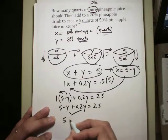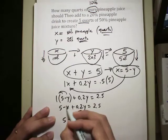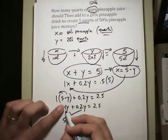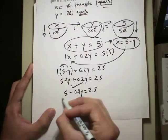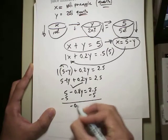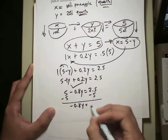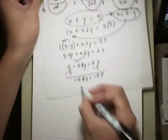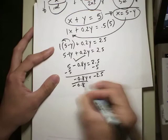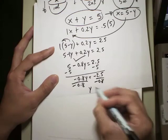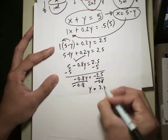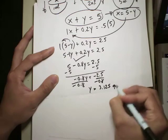Combining like terms, I have 5 minus, this is, don't forget, if I don't write it, it's actually one whole, right? So it's right here, negative 1 plus 0.2, which is negative 0.8Y equals 2.5. So if I clean this up a little bit more, subtracting 5 from both sides, I have negative 0.8Y equals to negative 2.5. If I divide it, Y will equal to 3.125 quarts.